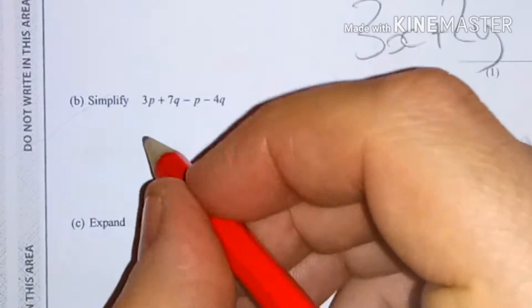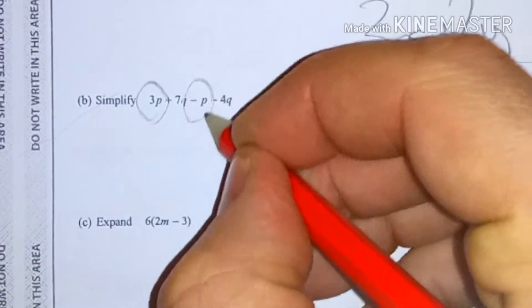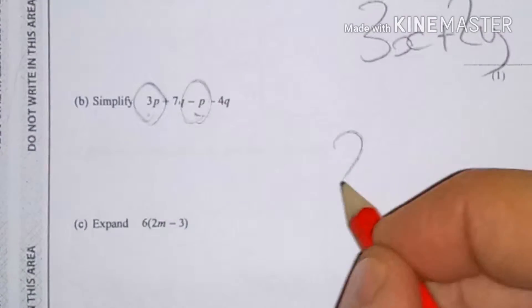Okay, simplify. I'm going to circle my p's first. So I've got 3p and a negative 1p, which is 2p.